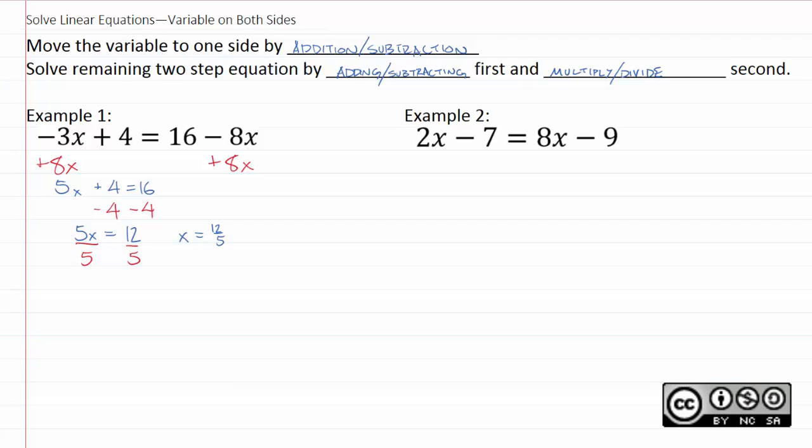We do the same thing with example two over here. So with example two, we have these two x terms. We want to have a single x term, so to that end, we subtract 2x, whereupon we get negative 7 is equal to 6x minus 9.